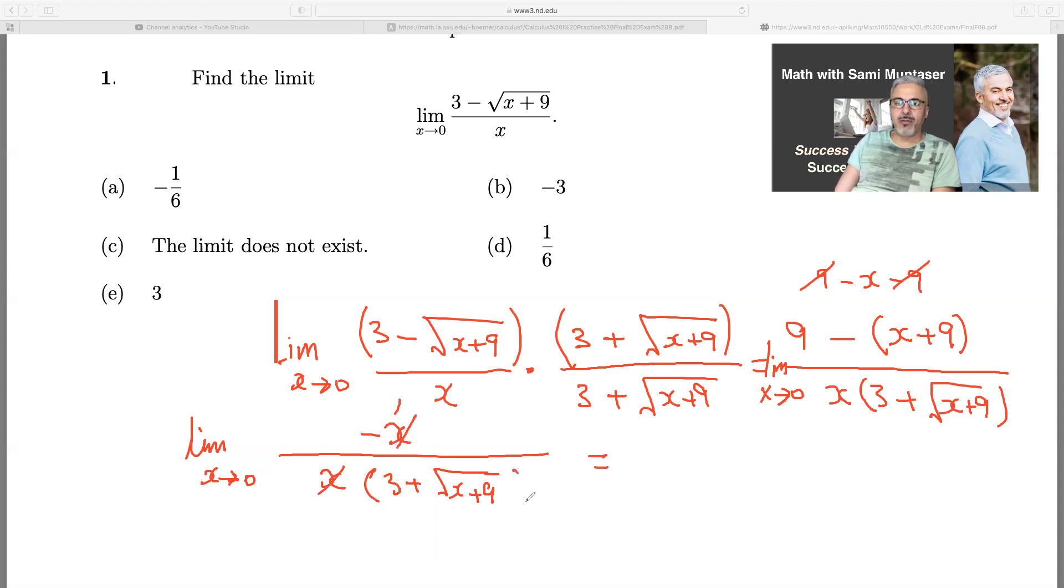Now what I'm going to do, I'm going to sub in the zero so you don't have to write the limit anymore. I have negative one on top and then three plus square root of zero plus nine. And that is zero plus nine is nine. So root of nine is three. Three plus three is six. So the final answer is negative one over six for that limit, which is a.